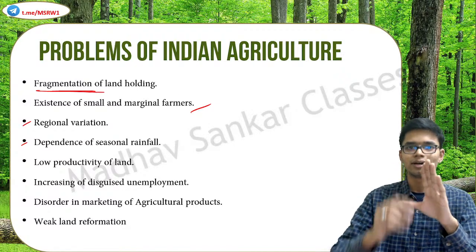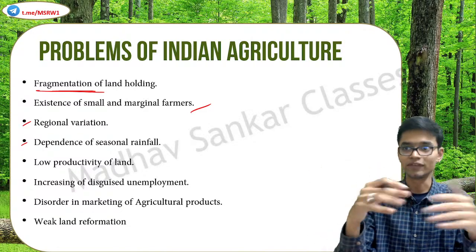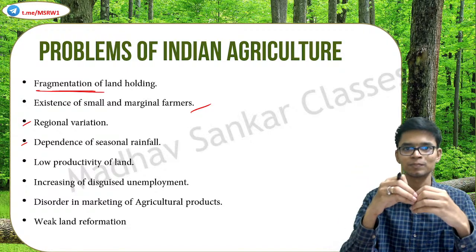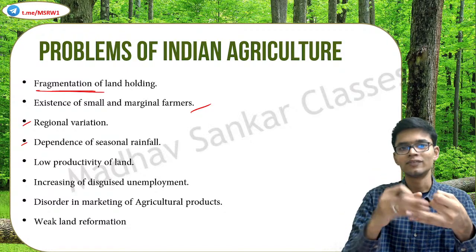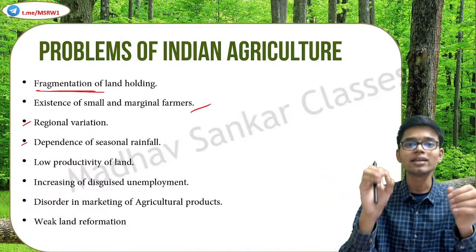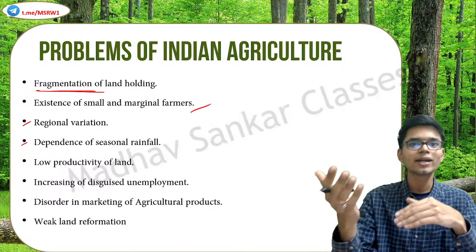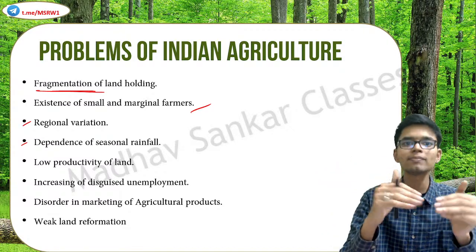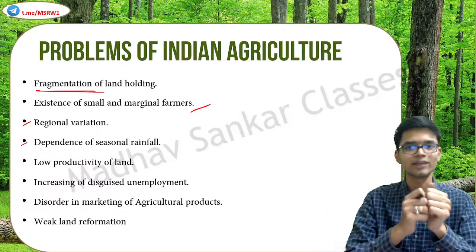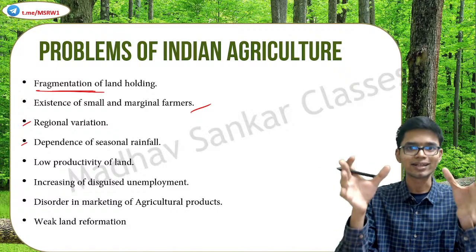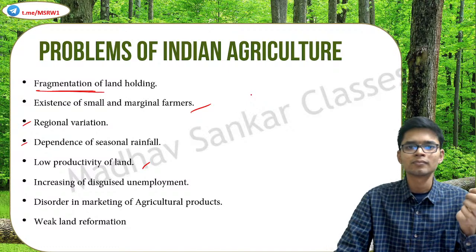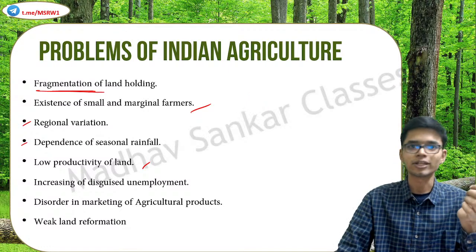Indian agriculture is heavily dependent on monsoon. If monsoon varies in either direction — too much or too little — it severely affects agriculture. India has experienced both flooding and droughts. The government has tried to resolve this by creating proper irrigation structures, but it is not up to the required level. There are still plenty of areas in India yet to be covered by irrigation infrastructure.